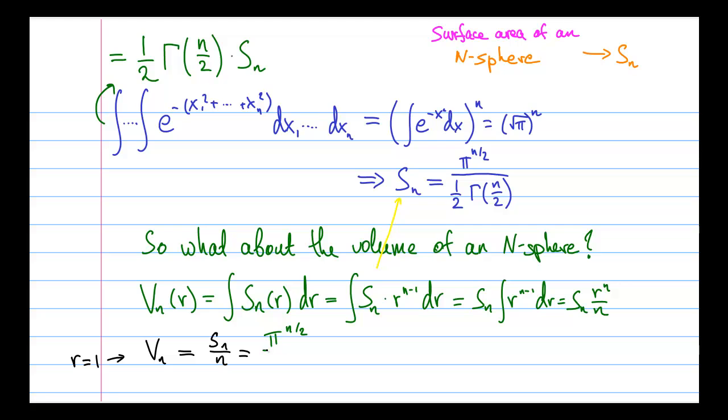We can write it down explicitly as pi to the power of n over 2 divided by n over 2 times the gamma function of n over 2. And we can use one of the properties of the gamma function to simplify it a little bit. So we get this very simple expression, and this is the volume of a unit n-sphere. Easy peasy!